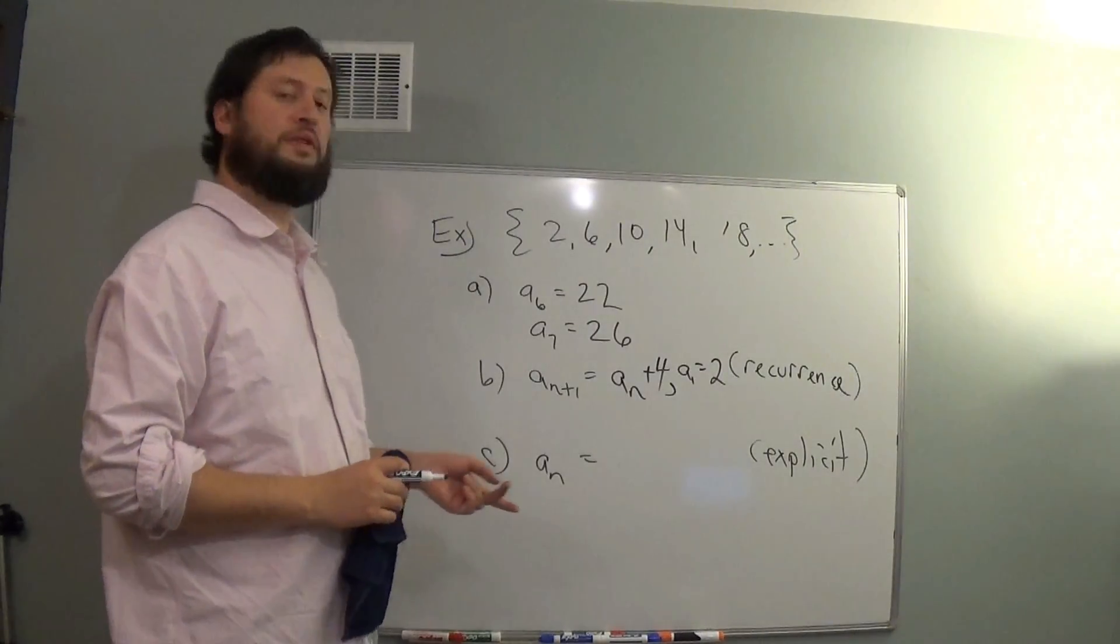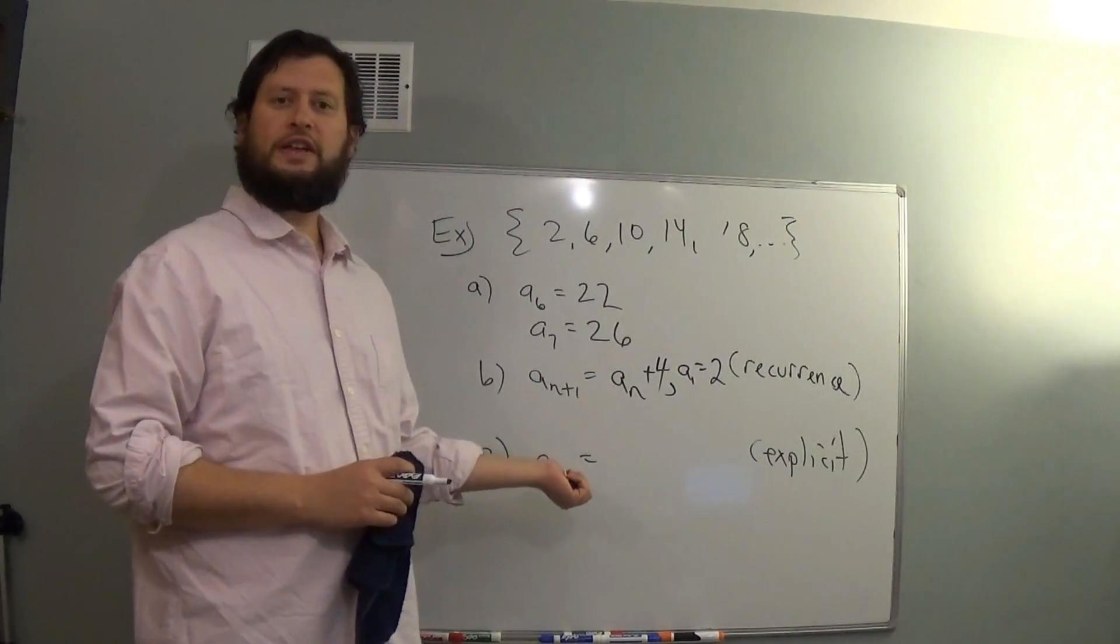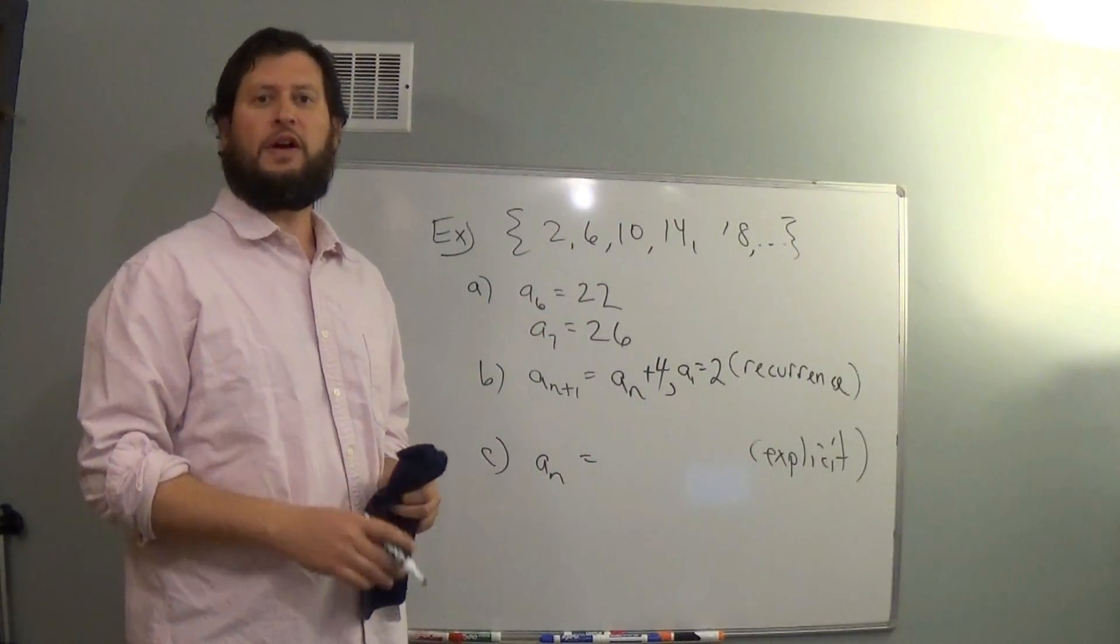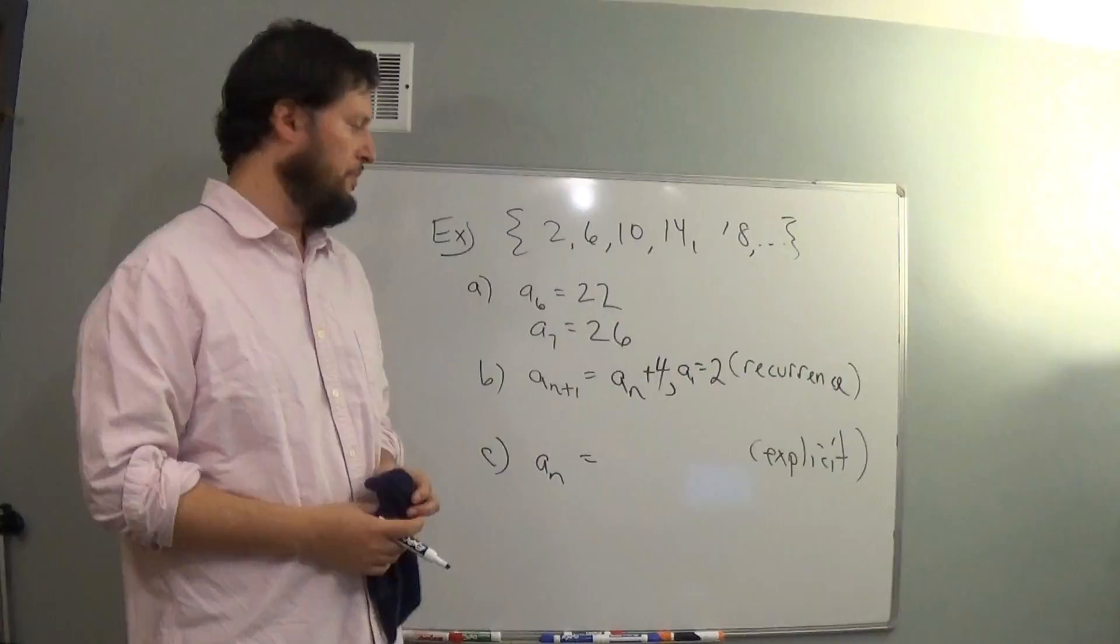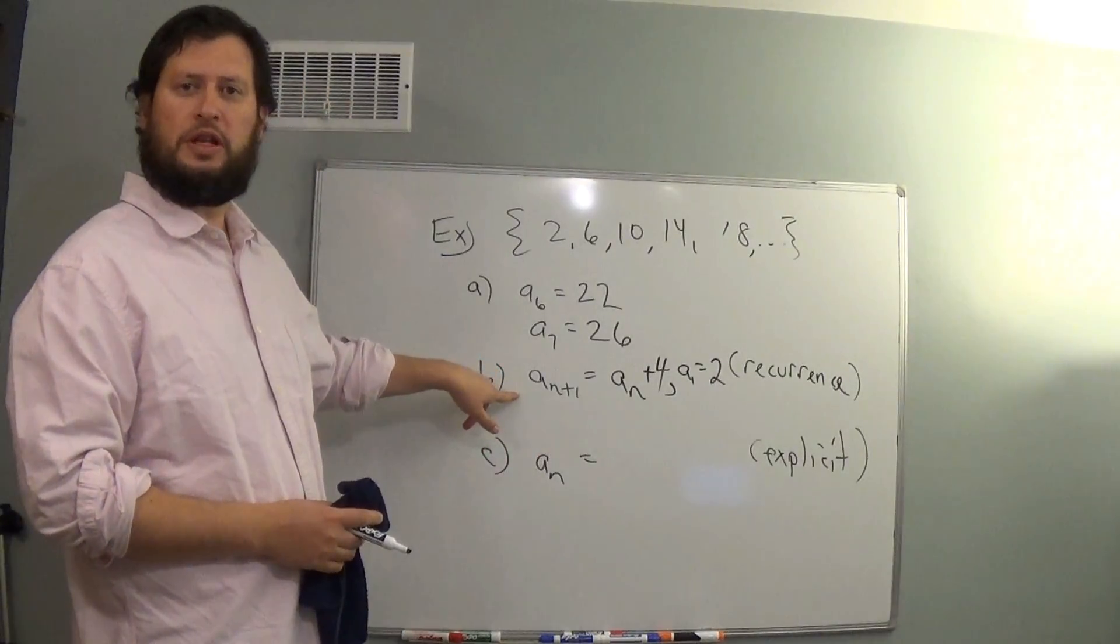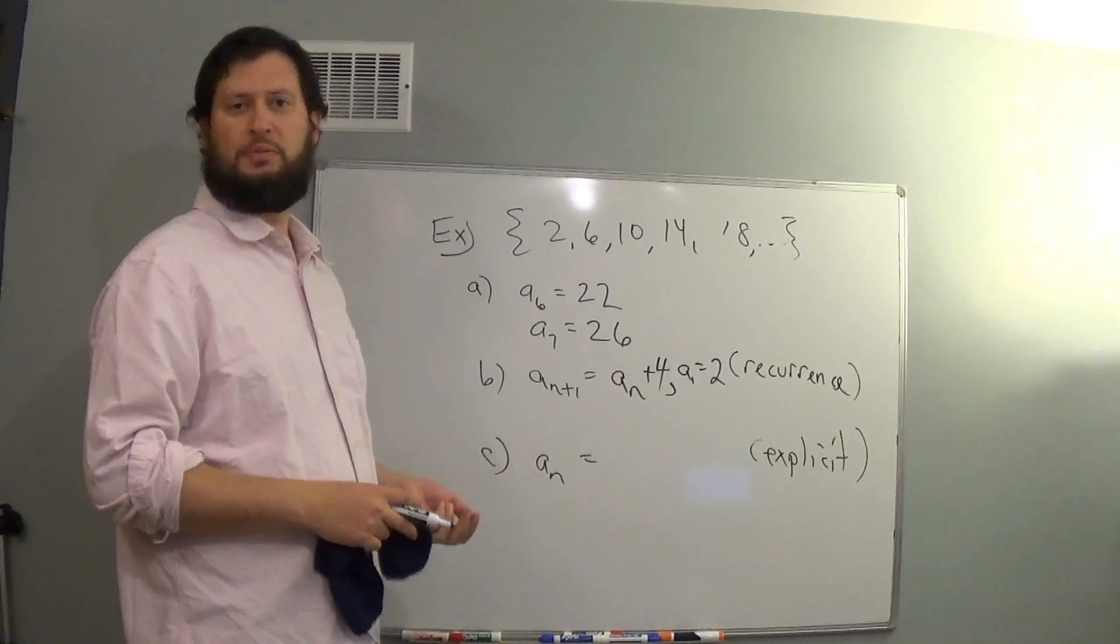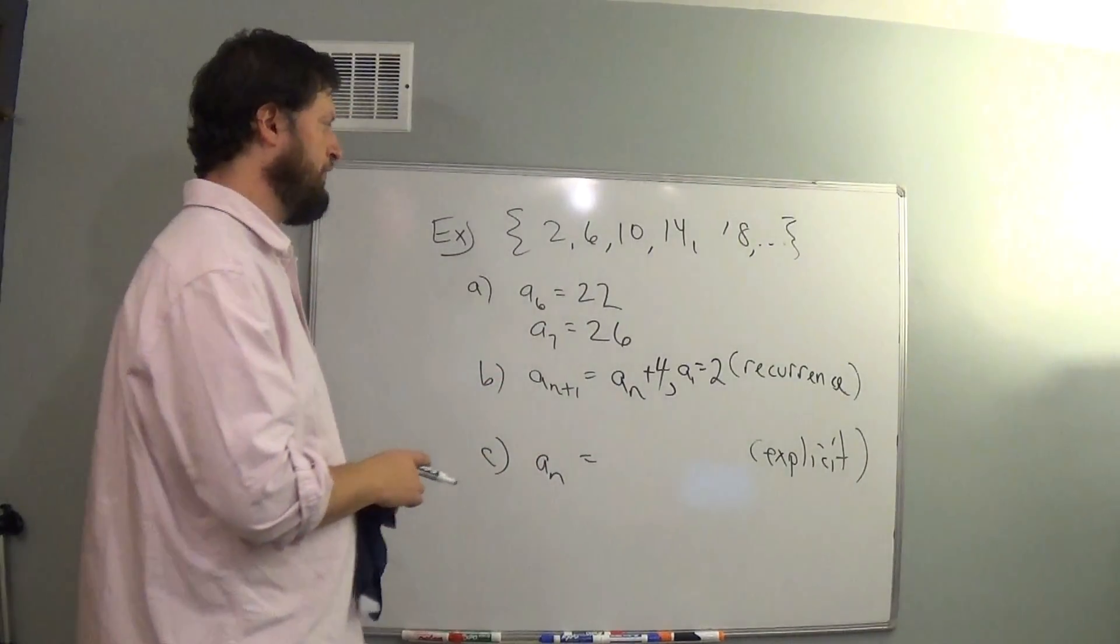What is an explicit formula for a(n)? In other words, if I give you n, can you tell me what the sequence term is? If I want to know the millionth term, I can't really use a recurrence relation, because I have to go through all million terms. I'd like to be able to just find the millionth term from a formula.